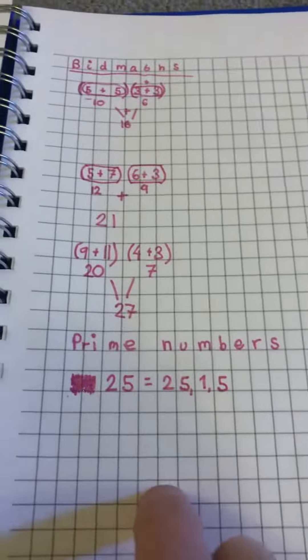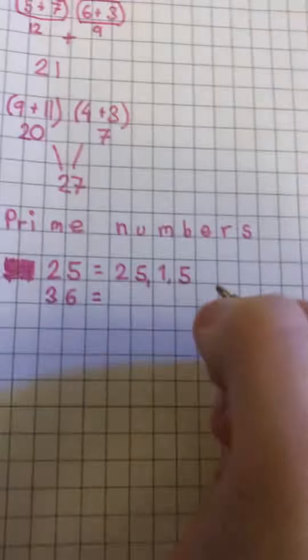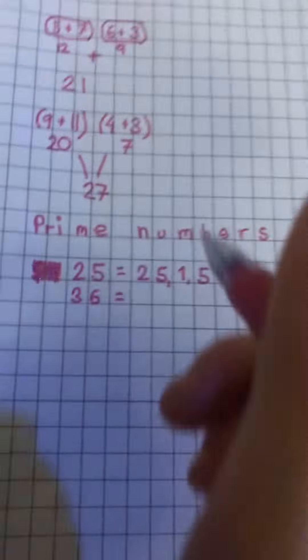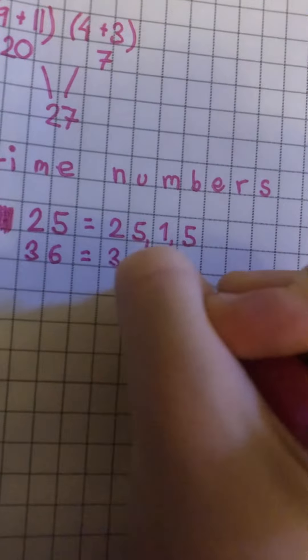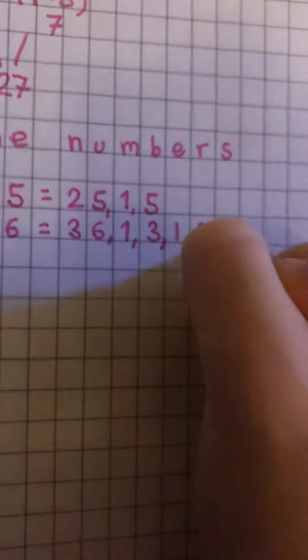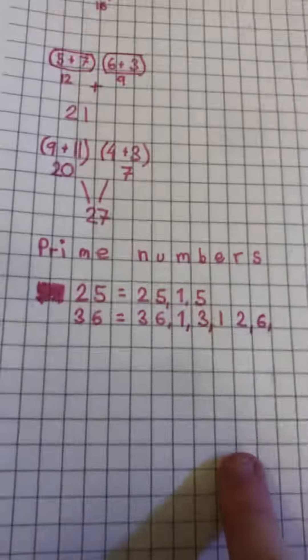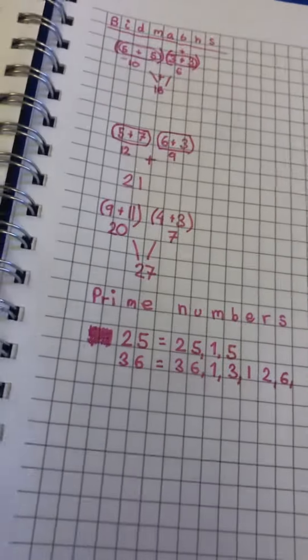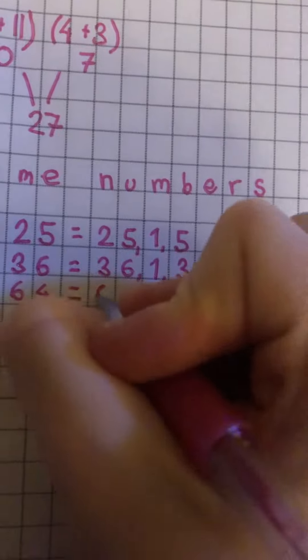Let me think of another one — you could have 36. You can have one, three, twelve, six — you can have one, two, three, four, five factors for 36.